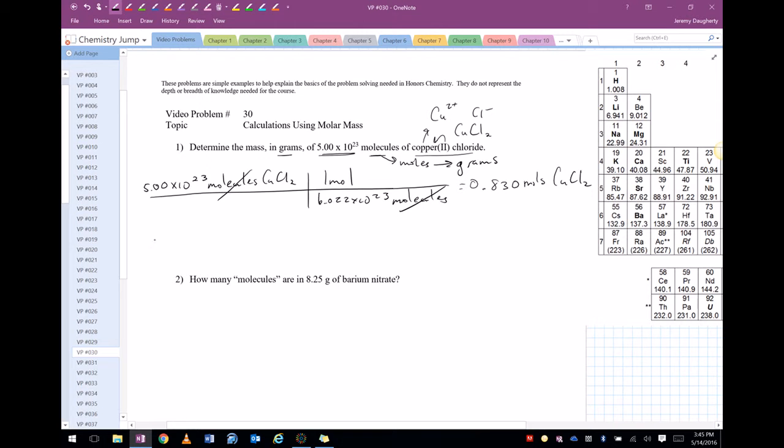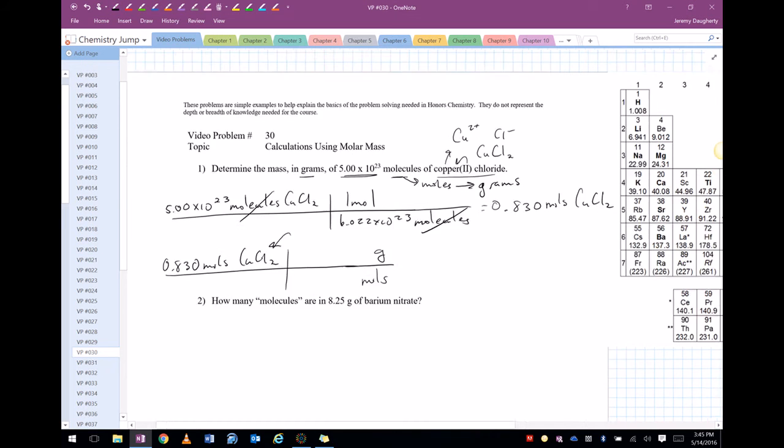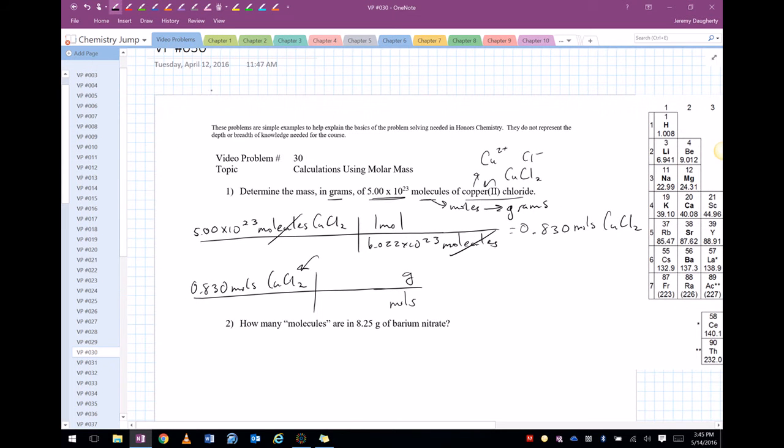But I want grams, so I'm going to bring that moles down here. 0.830 moles of CuCl2, and I'm going to convert that to grams. So I've got moles on bottom, grams on top. Any time you see grams over moles or moles over grams, you're talking about molar mass of whatever is in front of it. And so I need to get the molar mass of CuCl2. So I'm going to do that up here, actually, because I'm sort of running out of room. So let's see, molar mass of CuCl2.